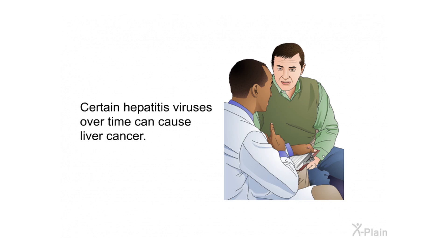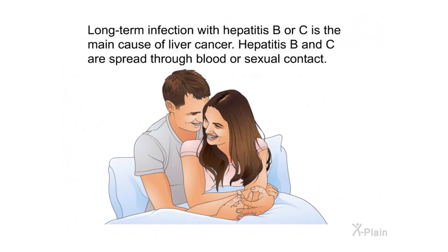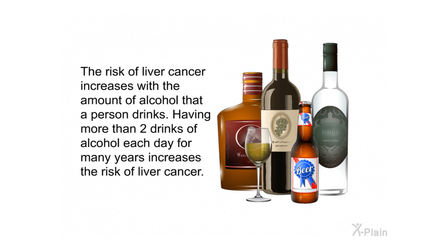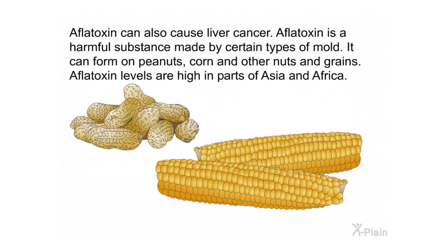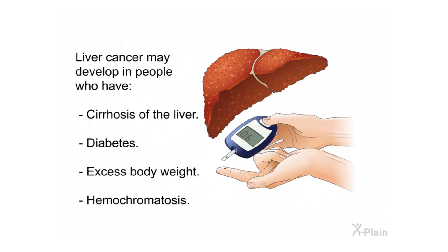Certain hepatitis viruses can, over time, cause liver cancer. Long-term infection with hepatitis B or C is the main cause of liver cancer, and these viruses are spread through blood or sexual contact. The risk of liver cancer also increases with the amount of alcohol a person drinks — more than two drinks per day for many years increases this risk. Aflatoxin, a harmful substance made by certain types of mold found on peanuts, corn, and other nuts and grains, can also cause liver cancer; aflatoxin levels are high in parts of Asia and Africa. Liver cancer may also develop in people who have cirrhosis, diabetes, excess body weight, or hemochromatosis.